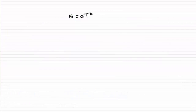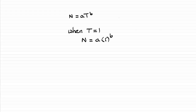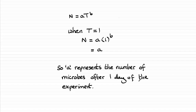For this last part, to explain the meaning of a: looking at the equation, if we set t equal to 1, we get n equals a times 1 to the power b. Since 1 raised to any power is always 1, we end up with n equals a. So when t equals 1, n equals a — meaning a represents the number of microbes after one day of the experiment.